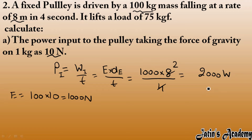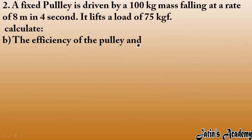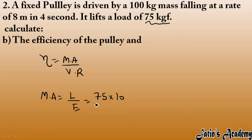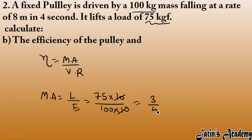Next, we calculate the efficiency of the pulley. Efficiency equals mechanical advantage over velocity ratio. Mechanical advantage equals load upon effort. Load is given as 75 kgf; converting to newton: 75 × 10 = 750 newton. Effort we already calculated as 1000 newton. So mechanical advantage = 750 / 1000 = 75/100 = 0.75.